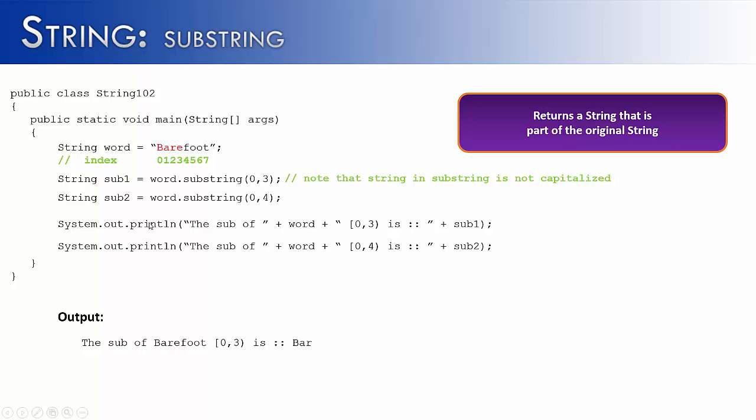So now when we run this, we would get the sub of barefoot 0, 4 is bare. And we get the correct part of the word that we're looking for, or the correct substring.